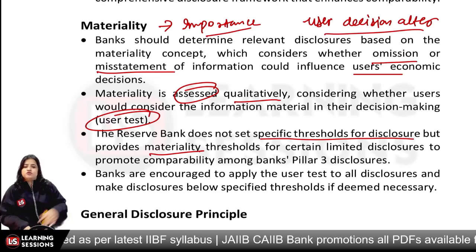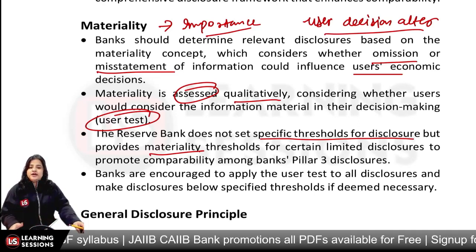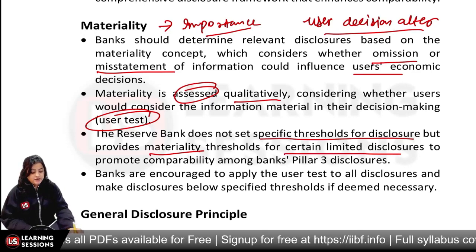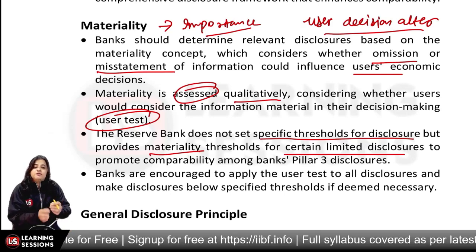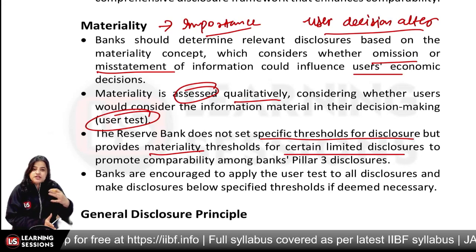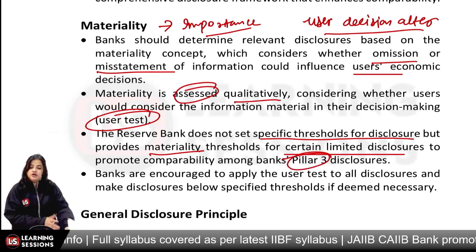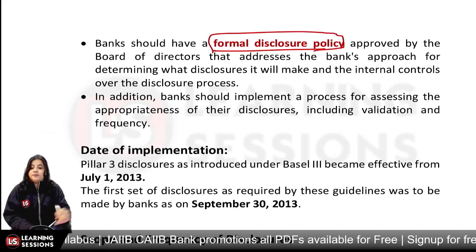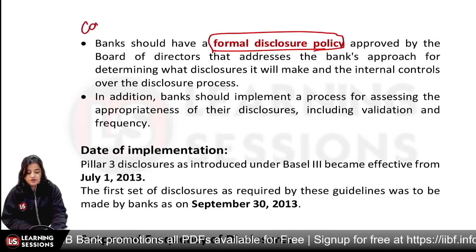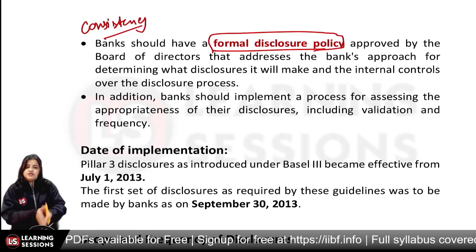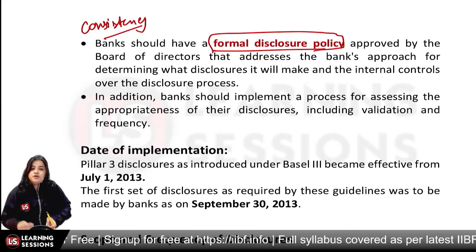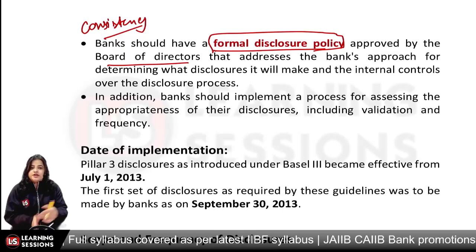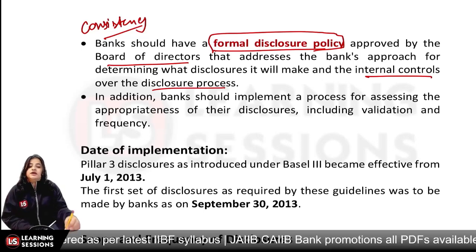There is no specific threshold for materiality because it is not easy to define. If a small company has a turnover of 10 million, materiality will be different versus a large bank — you can't define a universal threshold. There are certain limited disclosures that you don't need to give excessively, so that reporting doesn't become too large. These limited disclosures are told in Pillar 3. Banks should have a formal disclosures policy, because consistency is key in accounting and reporting.